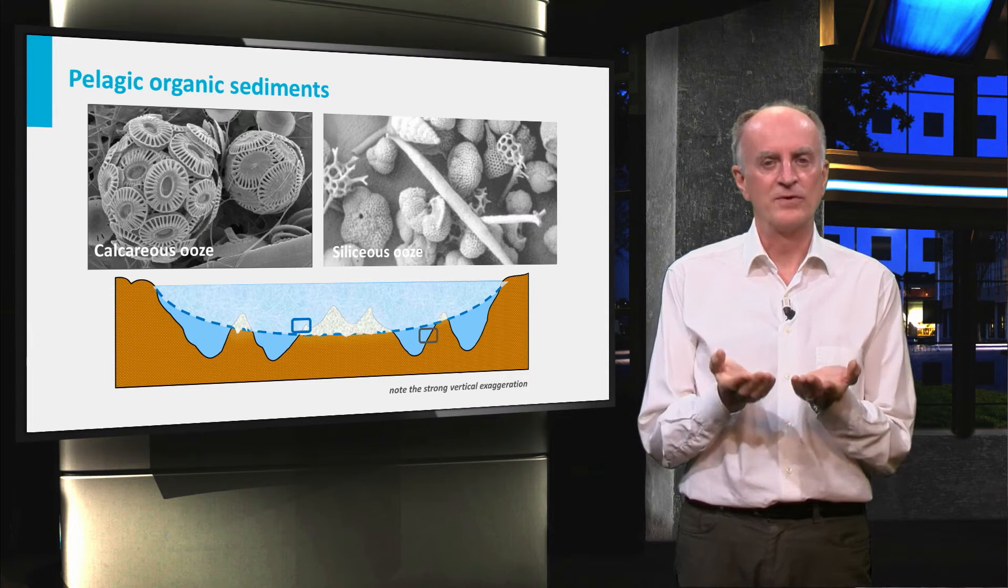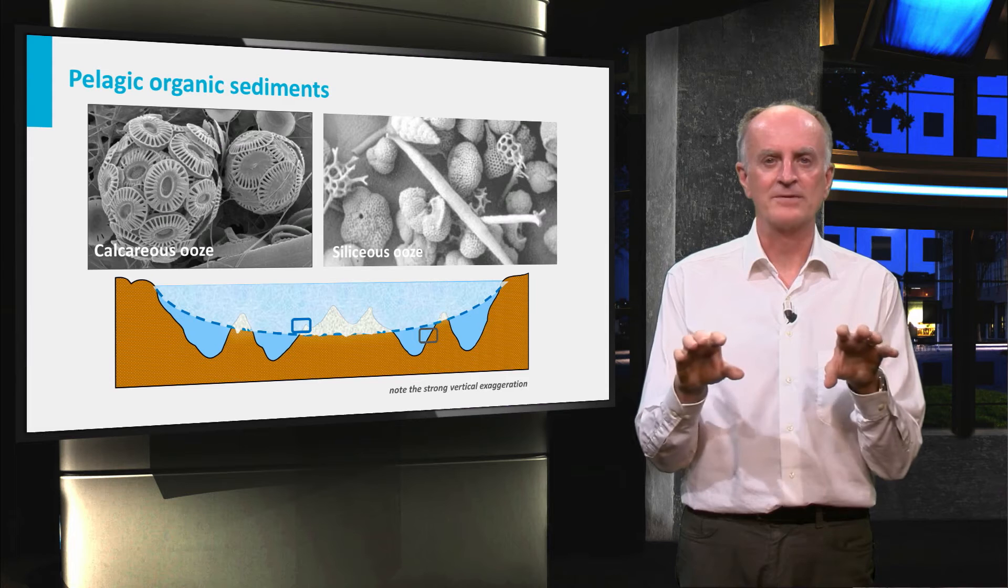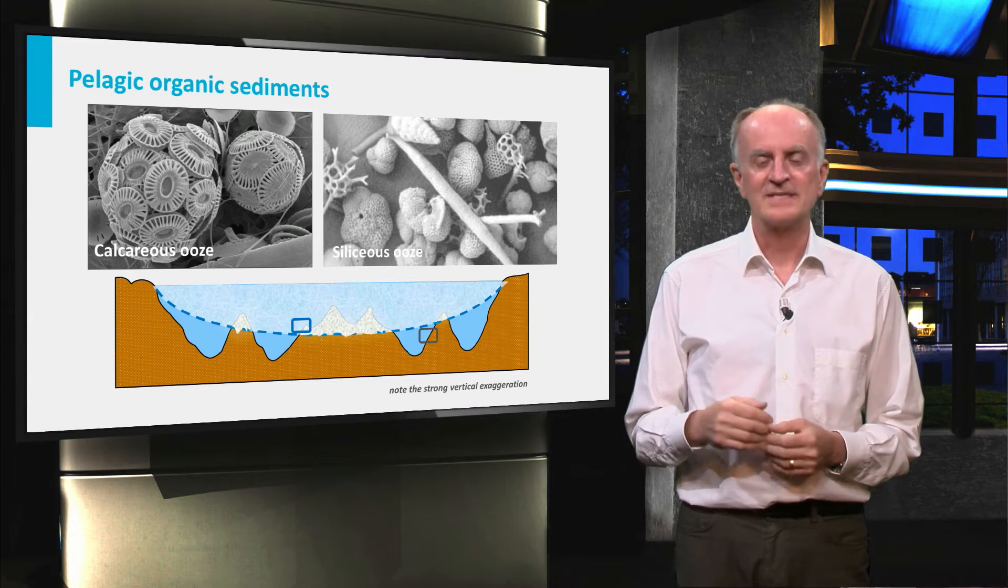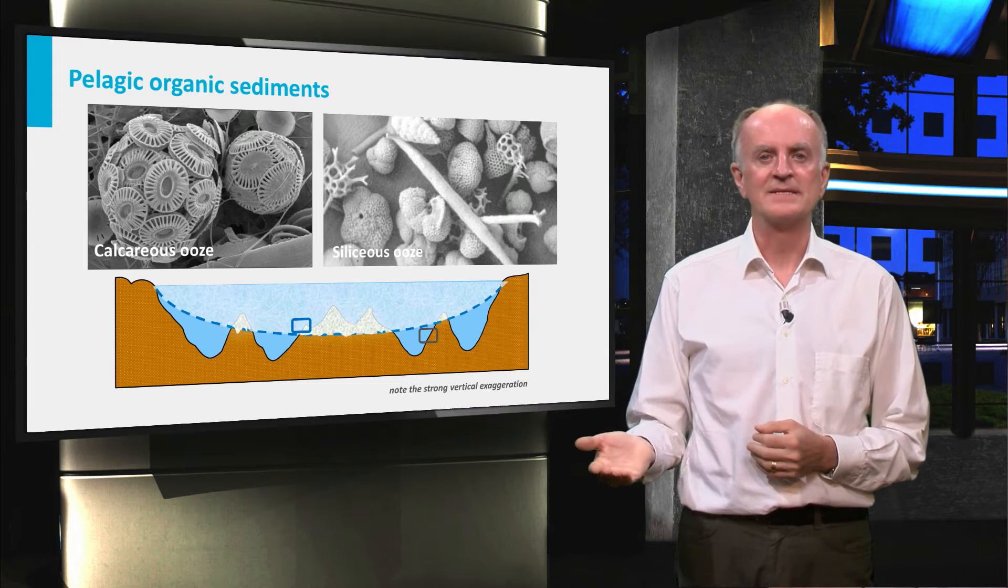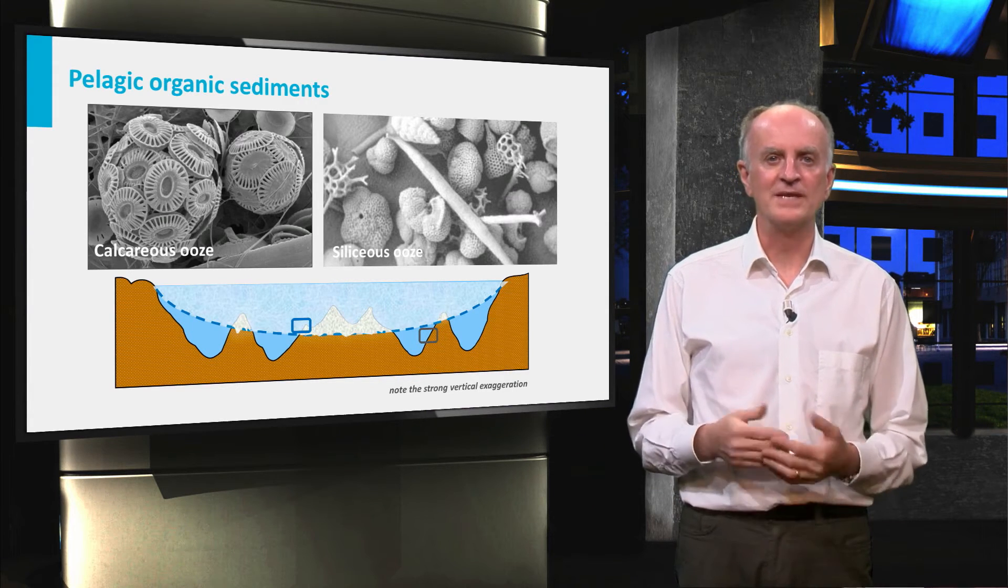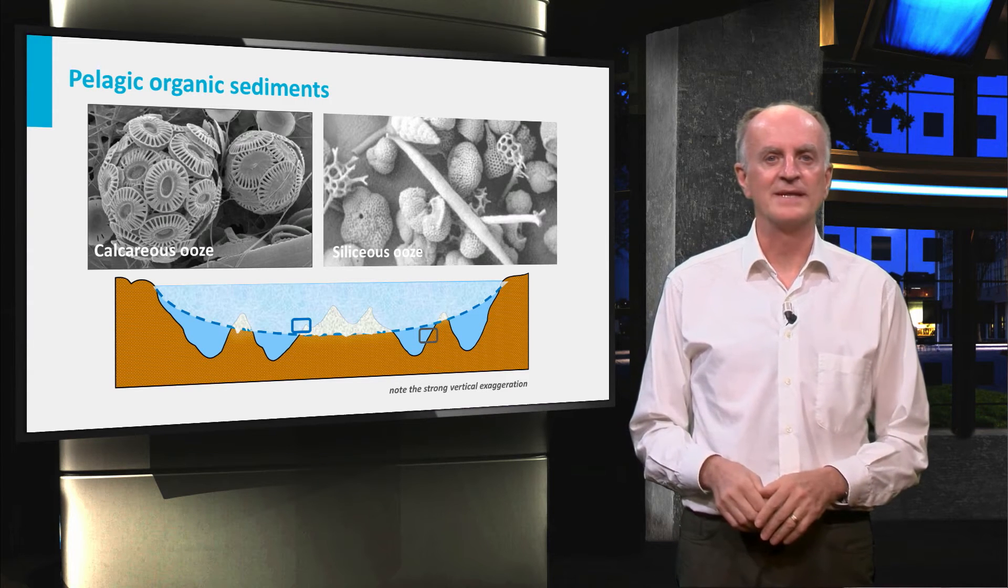In areas where the ocean floor is shallower than the CCD, a fine-grained calcareous mud is found called calcareous ooze. Sediments in regions deeper than the CCD would be quite different and essentially composed of the siliceous parts of the organism and of the clay minerals we will discuss in the next slide.